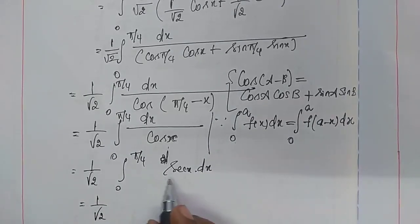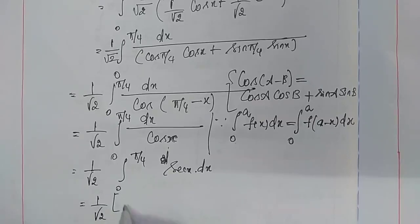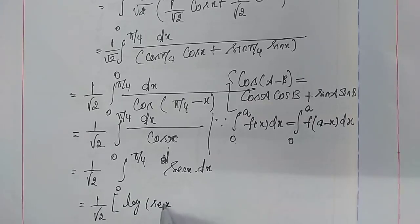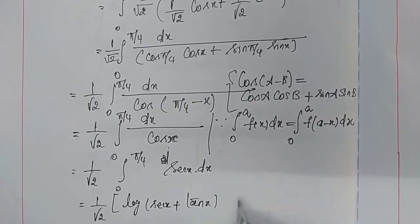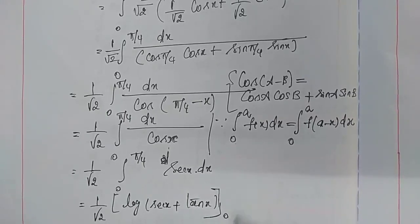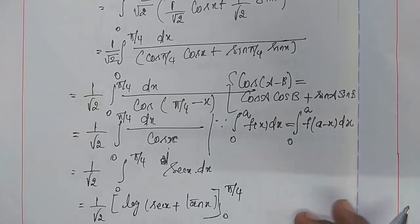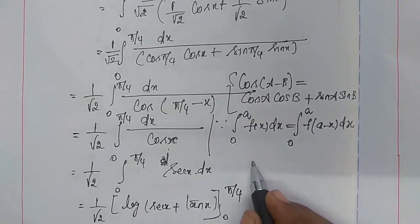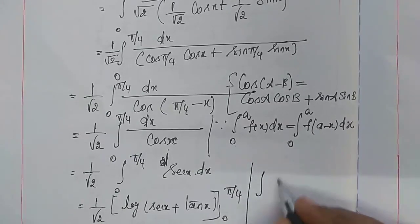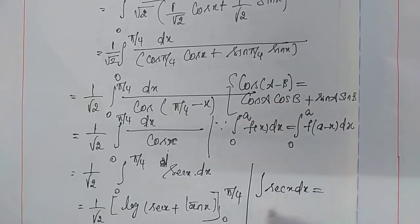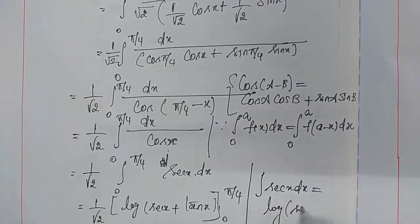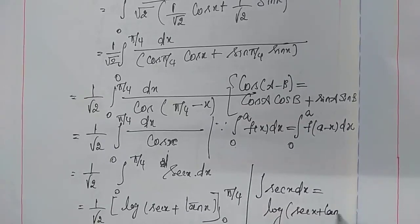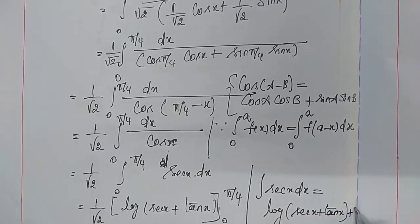Now apply the integral formula. The formula for ∫sec x dx is log|sec x + tan x| + c. So we have (1/√2) times log|sec x + tan x|, with the limit over 0 to π/4.